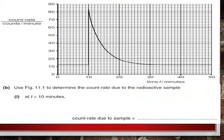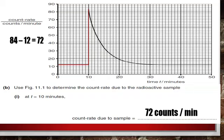Again, we will use figure 11.1 but this time to determine the count rate due to the radioactive sample at 10 minutes. At 10 minutes, you will see on the graph that the count rate goes up to 84. Knowing that the 12 count rate is of background, so 84 minus 12 equals 72. The count rate due to sample at 10 minutes is equal to 72 counts per minute.